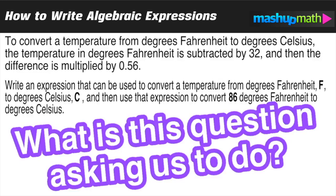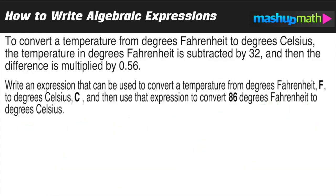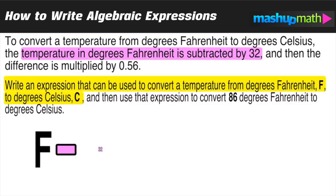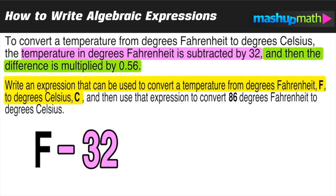First, we have to model an expression and then use that expression. We know that we want to convert degrees Fahrenheit to degrees Celsius. The first part of the question told us that if we want to convert between F and C, we take F, the number of degrees in Fahrenheit, and then take that and it is subtracted by 32.